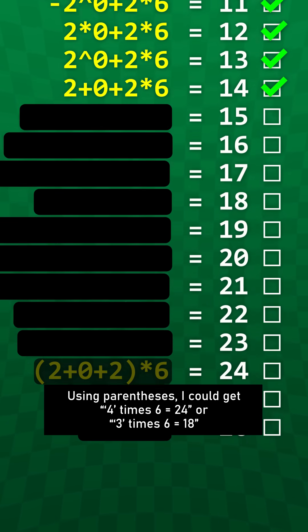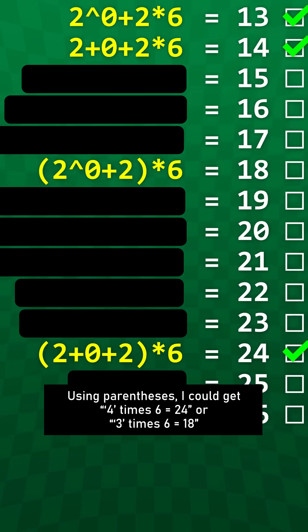Using parentheses, I could get 4 times 6 equals 24, or 3 times 6 equals 18.